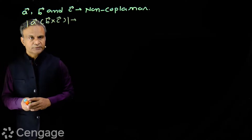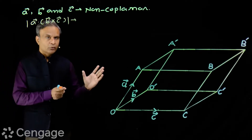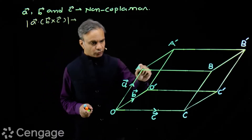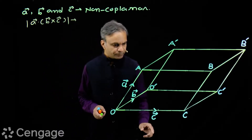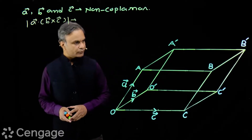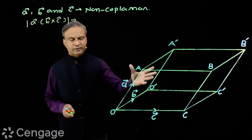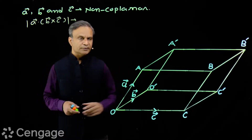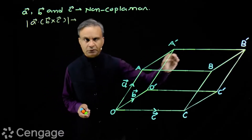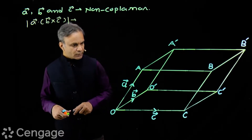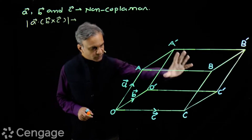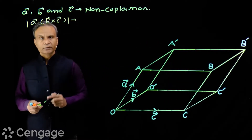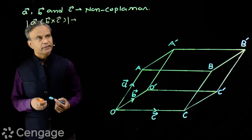Since A, B, and C are non-coplanar vectors, these three vectors can form a parallelepiped. A parallelepiped is a solid figure formed by six parallelogram faces — each face is a parallelogram. The volume of this parallelepiped is the modulus of A dot (B cross C).